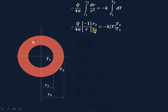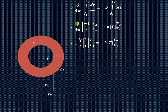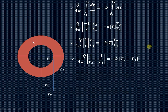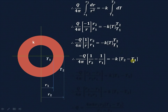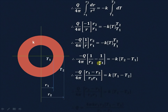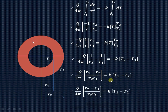The integration of 1 upon R² is minus 1 upon R, with limits from R1 to R2. Integration of dT is T, with limits from T1 to T2. Taking the minus sign outside: minus Q upon 4π times [1/R] from R1 to R2 equals minus K times T from T1 to T2. Substituting limits: 1/R2 minus 1/R1 equals (R1 minus R2) divided by R2·R1. Taking the minus sign inside gives K(T1 minus T2).